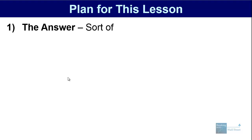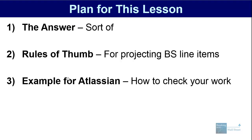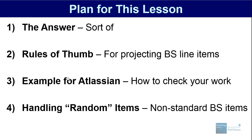Our plan for this lesson: first I'll give you an answer to this question — it's not going to be a universal rule, but I'll explain how to think about it. Then I'll give you some rules of thumb for projecting specific line items, give you an example for Atlassian — a software company from one of our case studies — show you how to use it to check your work, cover how to handle random line items on the balance sheet, and then do a recap and summary.